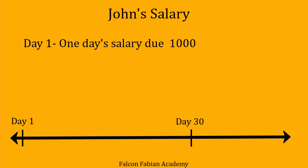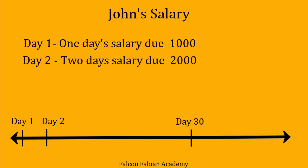When John works for the business on day one, at the end of day one, he has earned a salary of $1,000. We are not supposed to pay him today — payment happens at the completion of 30 days. Still, the business has incurred an expense of $1,000 at the end of day one. At day two, the expense becomes $2,000, and at the end of day three, it becomes $3,000.